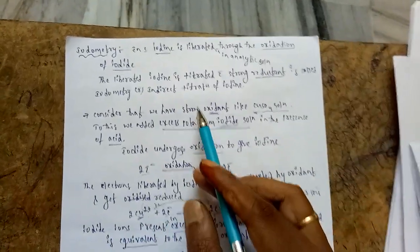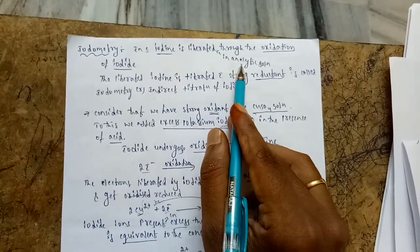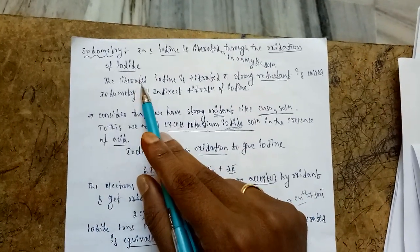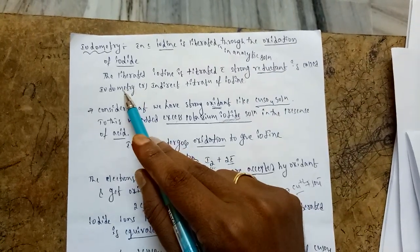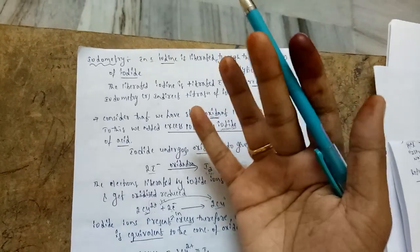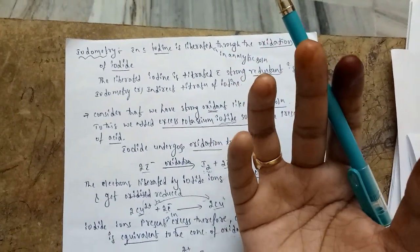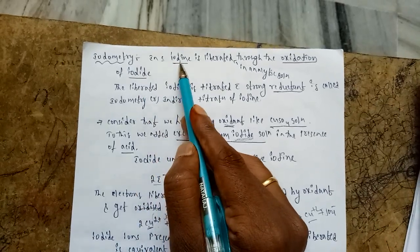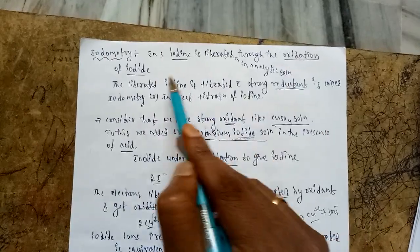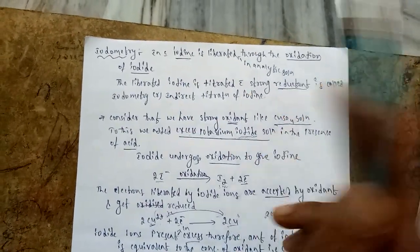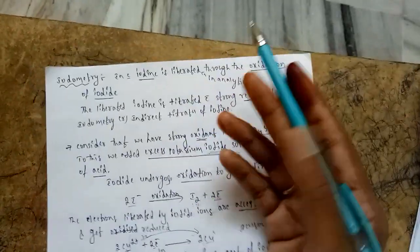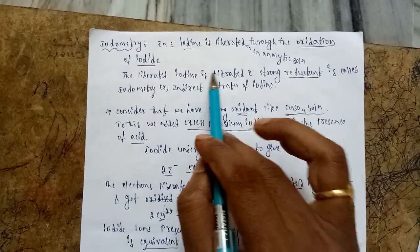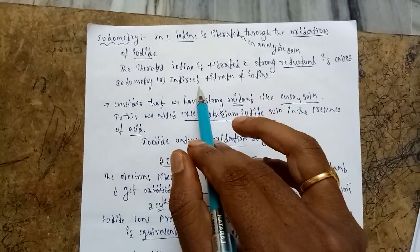Coming to iodometry: iodine is liberated in the analytical solution through the oxidation of iodide. This liberated iodine is then titrated with a strong reductant — this is called iodometry or indirect titration of iodine. In iodometry, first we take iodide solution — not directly iodine form. This iodide is converted to iodine due to the oxidation process. Before going to titration, iodide undergoes oxidation to give iodine, and this liberated iodine is then titrated with a reductant.